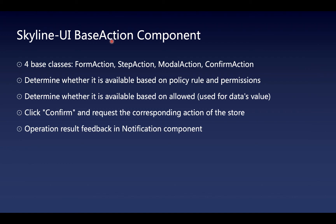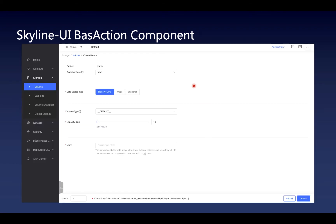Finally, it is the base action component. It has four base classes: form action, step action, modal action, and confirm action. Whether actions are allowed depends on policy rules and permissions. When the status changes or there are certain limitations, whether you can take action depends on the allowed property. Let's look at the create volume page as an example. In this page, you can click confirm and it will request the corresponding action of the store. The operation feedback will be returned in the notification box.